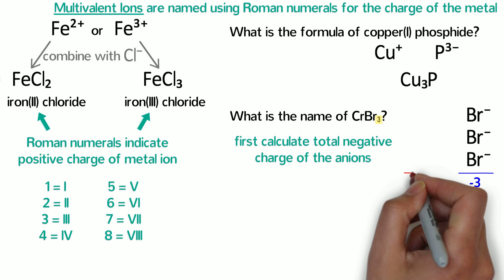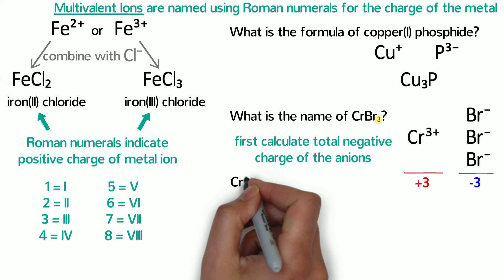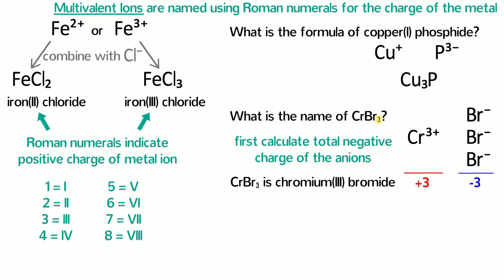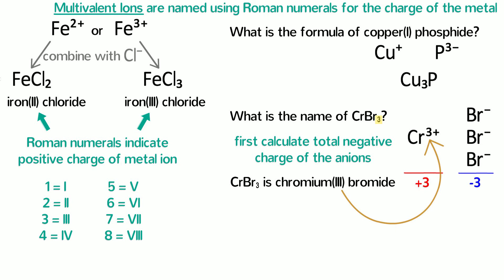That means the total charge of the cations must be positive 3 to balance the charge. Since there's only one chromium in the formula, its charge is positive 3. That means the name of CrBr3 is chromium(III) bromide. Remember that the Roman numeral 3 refers to the charge of chromium, not the number of bromides in the formula.